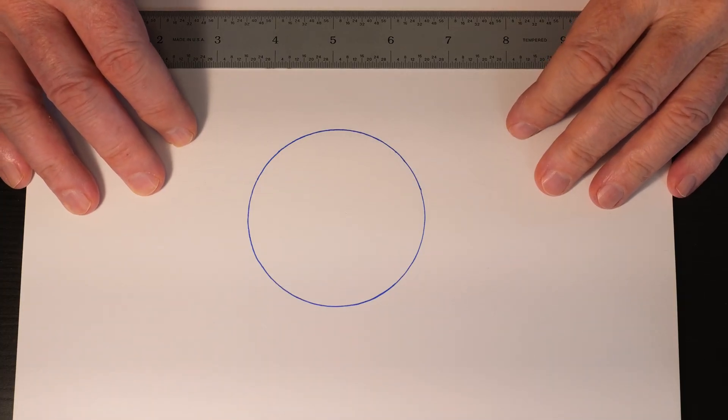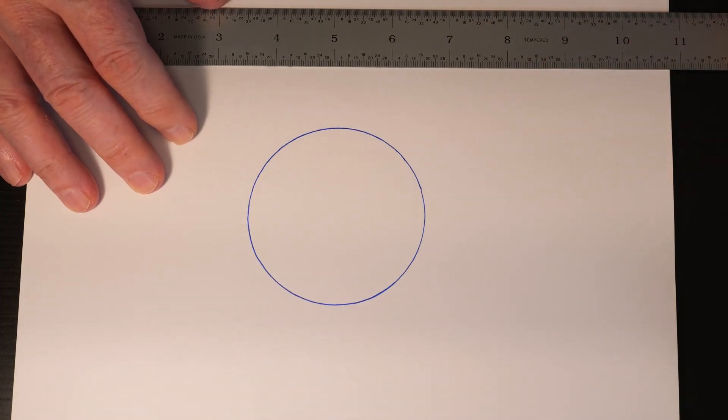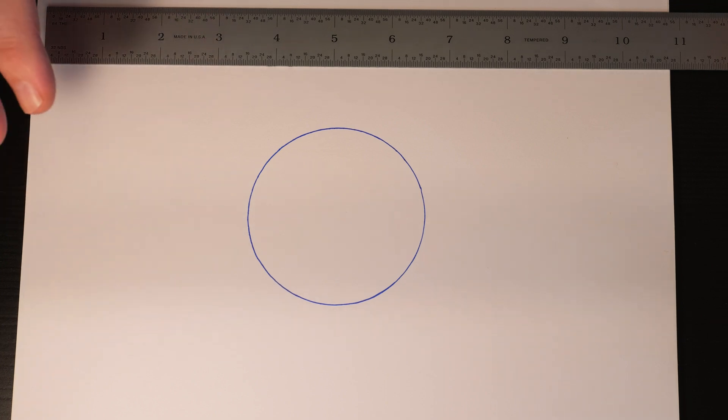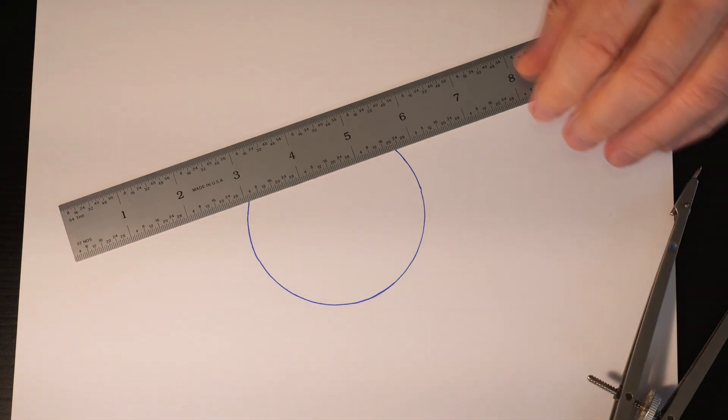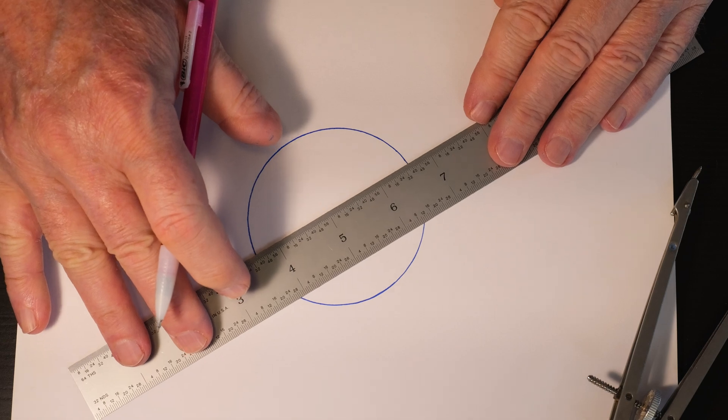Here's an easy way to find the center of a circle with just a straight edge and a compass. This works on any size circle. First thing we're going to do is draw a line across any two points of the circle.